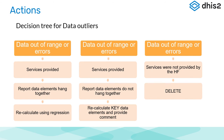A decision tree was developed for data outliers. If data was out of range, they first checked whether the data elements hung together and made sense. If they did, regression was used to recalculate a value that made no sense. If the data elements did not hang together, the key data elements were recalculated and a comment was provided using data from previous and subsequent months. If there was data but no services were provided by the health facility, it was simply deleted.